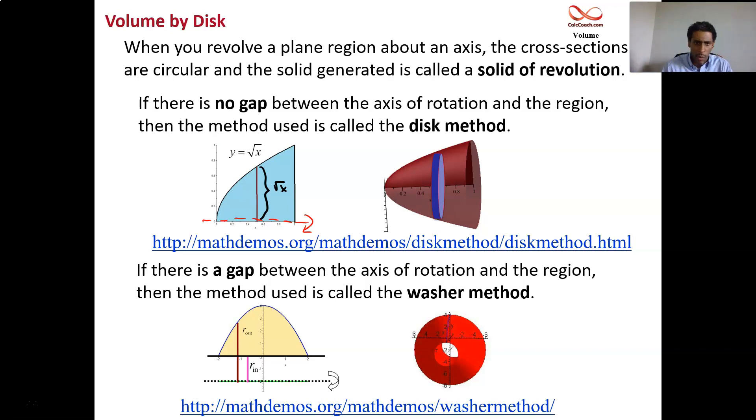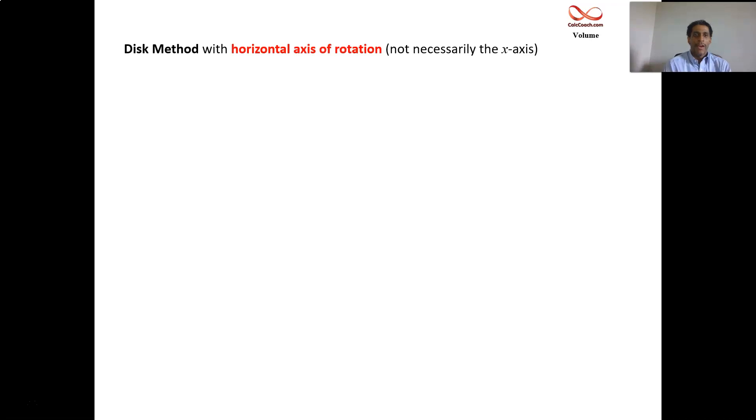Now let's dig into disk method, why the formula is what it is, and work some examples. When your axis of rotation is horizontal, like the x-axis but not necessarily the x-axis, when you slice perpendicular to that axis, your cross-sections are going to be circles. The area of a cross-section is what you integrate because in disk method, you're doing both revolution and slicing at the same time. So it's just pi r squared.